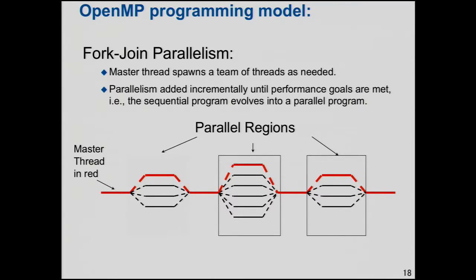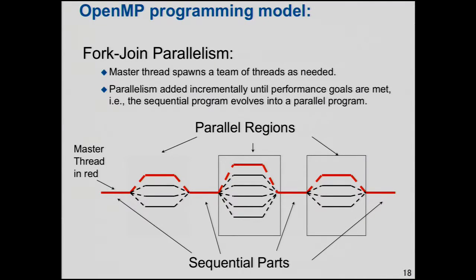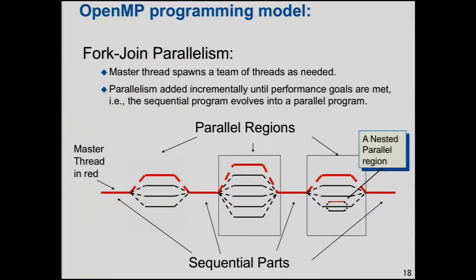We call those parallel regions. A region in OpenMP refers to the directive, the construct name, and all the code called inside of it. Those areas in between are called sequential parts. Your program becomes like a string of pearls — sequential parts with parallel regions. You can even nest them: inside that last parallel region, one of the threads can say it would like to expose additional concurrency and fork off an additional team. This is the basic fundamental model behind the core of OpenMP: the fork-join model.